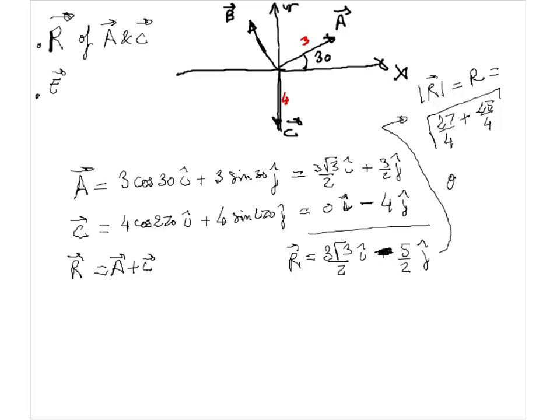And for the angle θR, I know I just need to take the arctangent of minus five-half and three square root of three over two. And here, we have to be careful. We know that the negative sign is on the j. Therefore, the vector R is going to be on the fourth quadrant. And then we can check the magnitude of each.